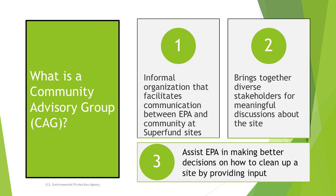The number of people in a CAG can vary depending on the community, but CAGs typically have representatives that are directly impacted by, or have an interest in, the site investigation and cleanup. A diverse CAG membership allows all sectors of a local community to participate in decisions about site plans and other environmental issues. Although final site decisions are the responsibility of EPA, the agency looks to the CAG to gain a better understanding of how certain decisions will affect the community.